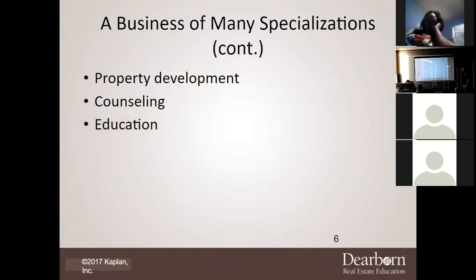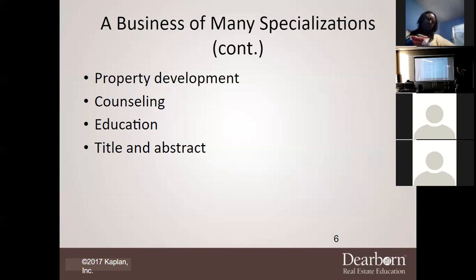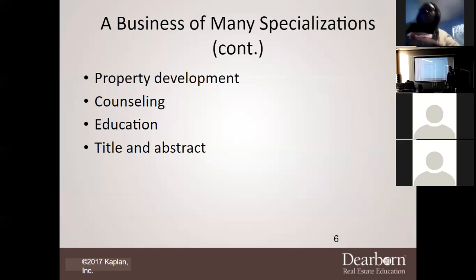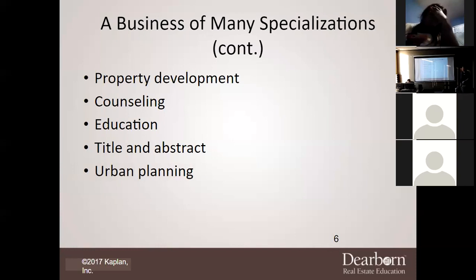You can also go into education — teaching and assisting people in getting their licenses. There's also title and abstracting work. You can go out and find property records, check for liens. I don't recommend an agent do title abstract work on their own sale — that's a conflict of interest. However, if you're an investor wanting to avoid paying hundreds or thousands in abstracting fees, knowing that work yourself can save you money.